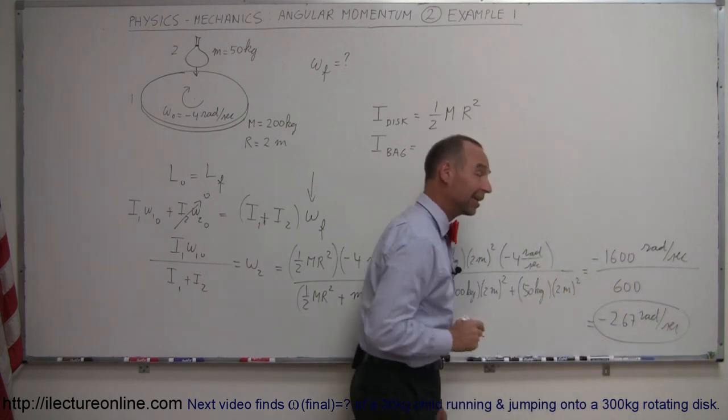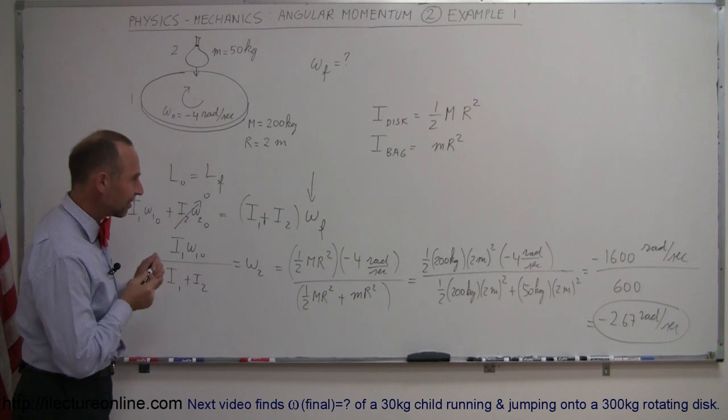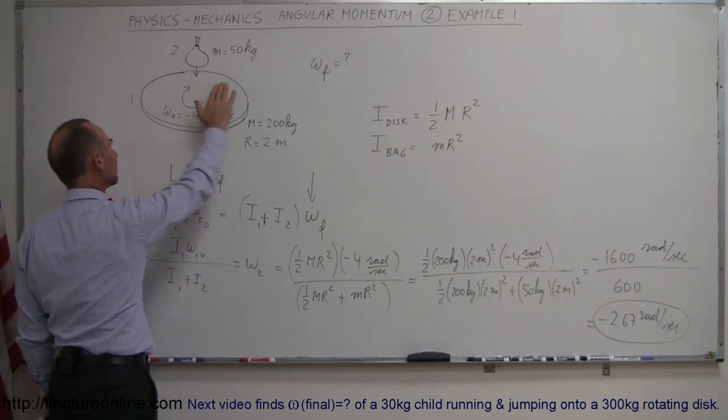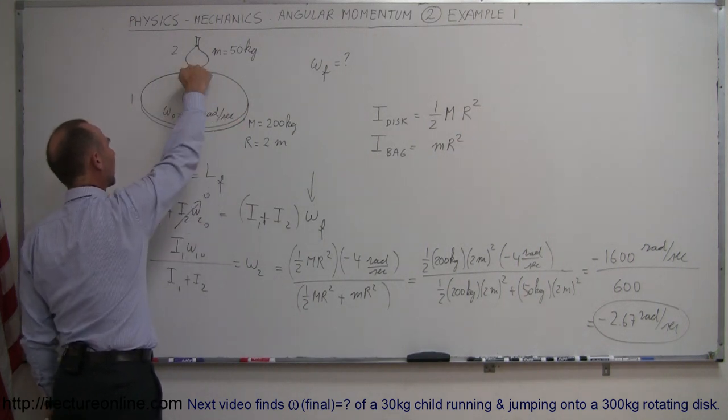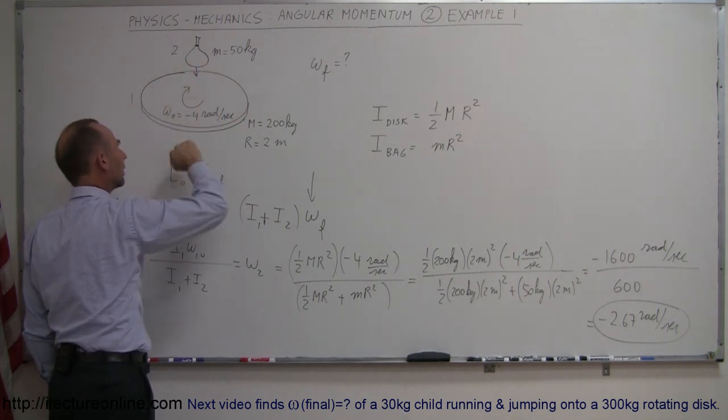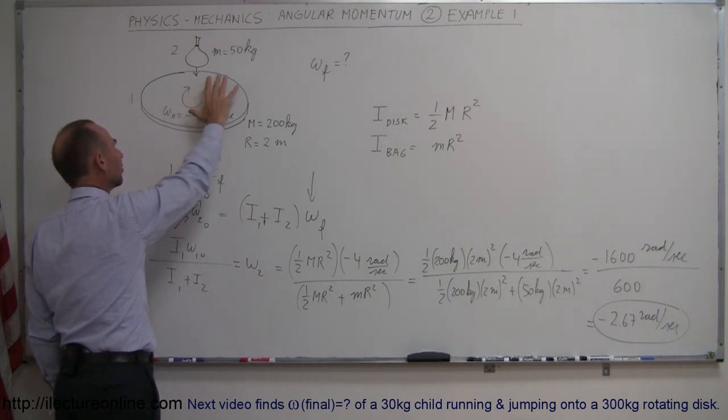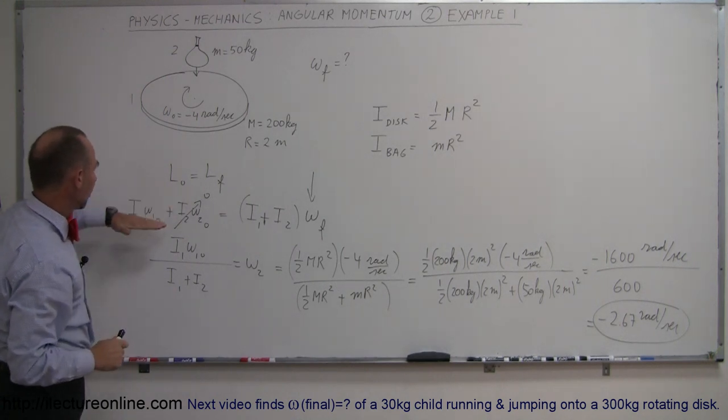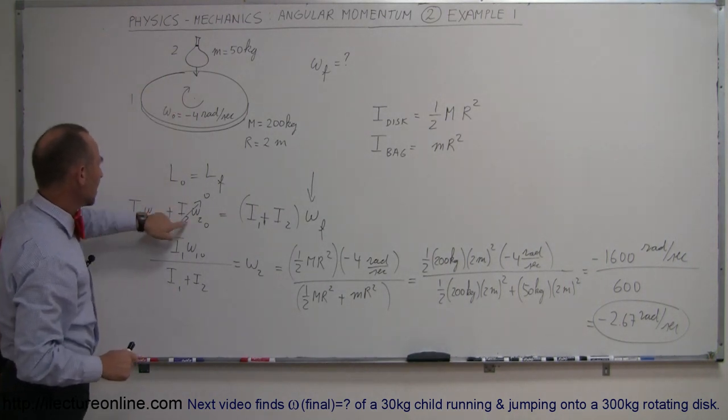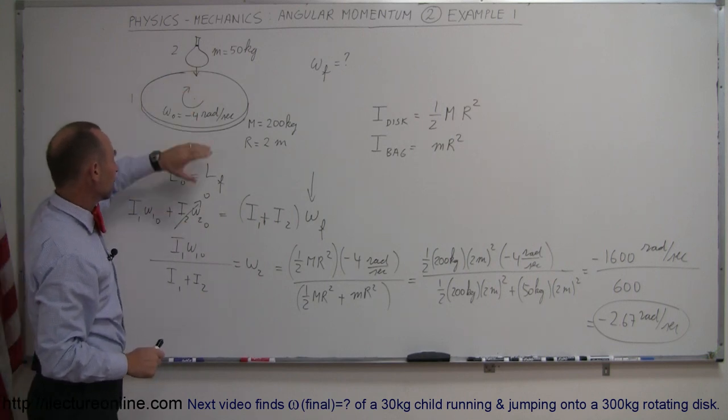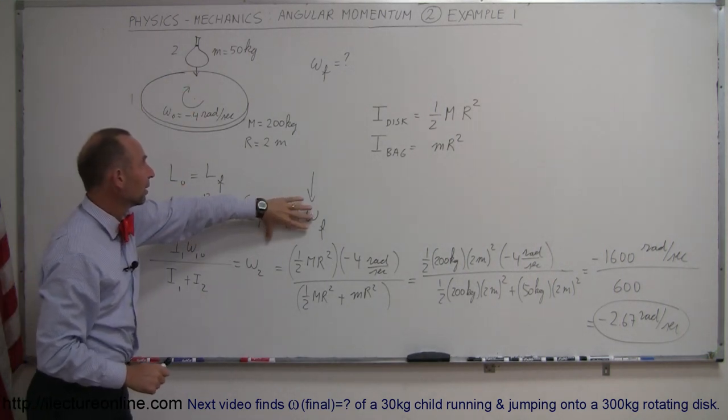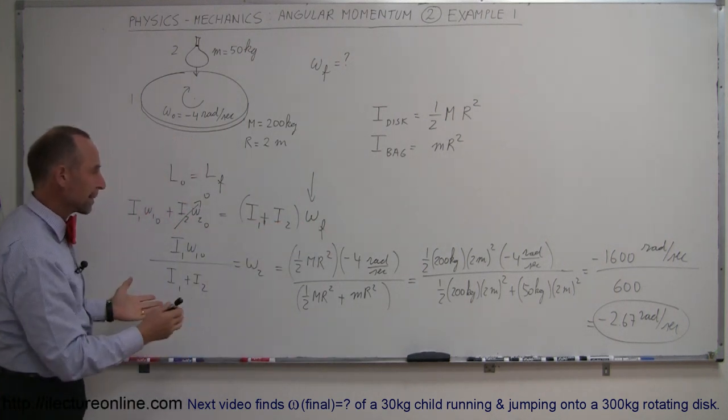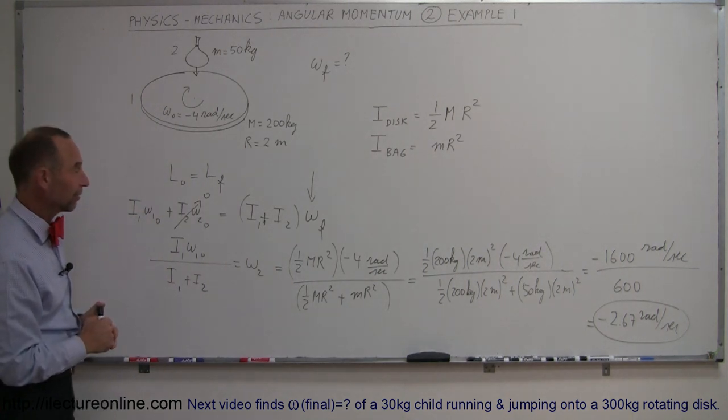All right, so that would be the final angular velocity. Now that makes sense, because when we take a look at it, notice that we have the disc first rotating at minus 4 radians per second, and then we drop a bag of sand on it, which is going to slow it down, but obviously not enough to make it completely stop, because angular momentum is conserved. So we have the initial angular momentum of the disc, the initial angular momentum of the bag is zero, added together, that equals the final angular momentum of the two combined. And that's how you solve for that final angular velocity.